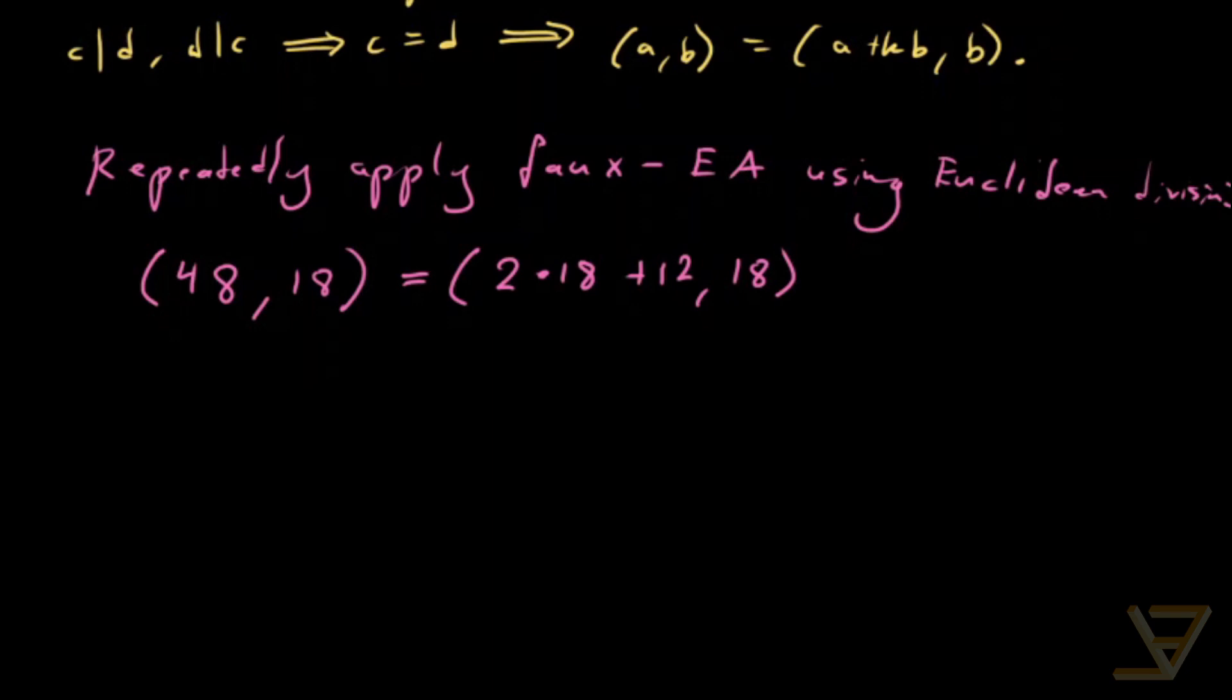So that's 2 times 18 plus 12. So we're using Euclidean division over here. And that equals, by the Faux-Euclidean algorithm, we can get rid of this part, and we find that this is just equal to the GCD of 12 and 18.